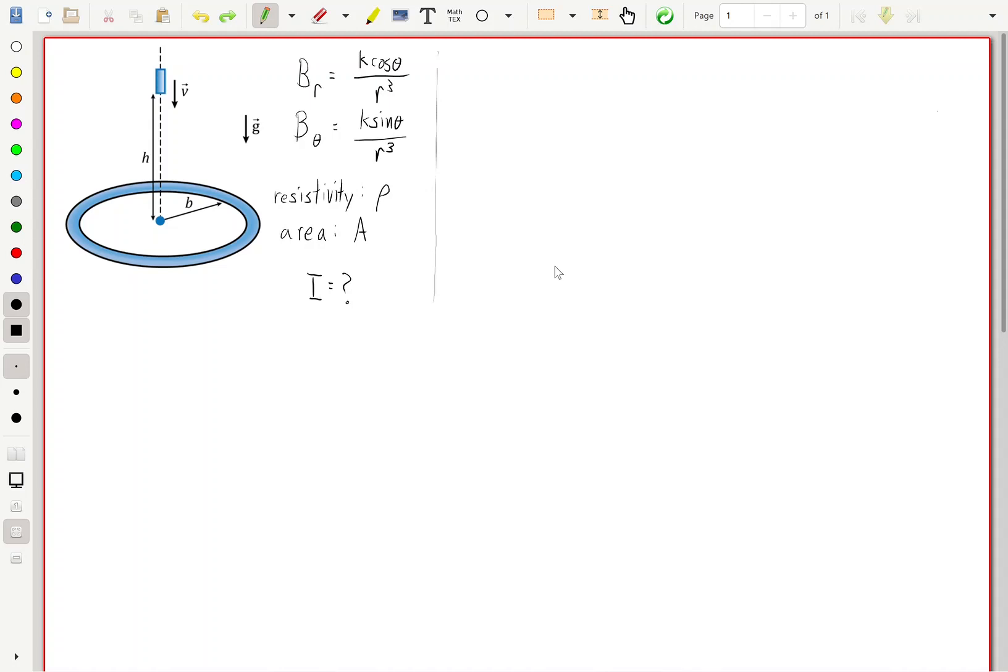In this problem, we have a small piece of magnet falling through a constant gravitational field along the vertical line, which goes through the center of this metallic ring, normal to its plane. The material of this ring has a resistivity of rho, a cross-sectional area of A, and we're asked for what is the current.